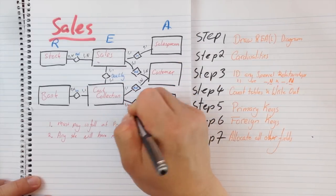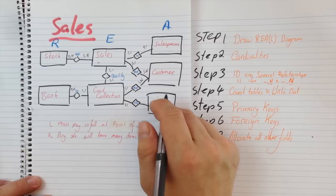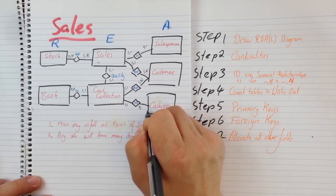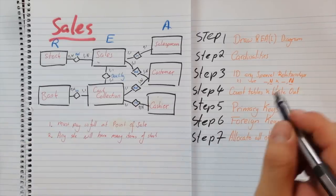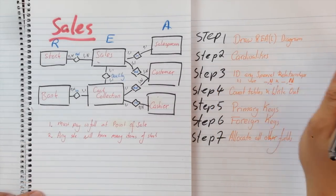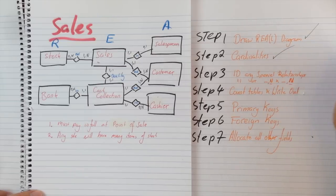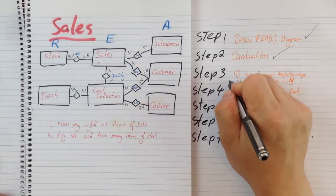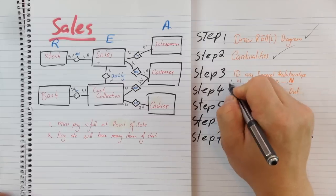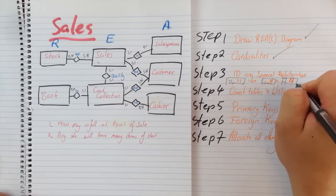We know that the cashier relationship will be one-to-one because every cash collection must be collected by a cashier, and every single cashier can collect zero — if it's their first day — or many, because they've worked here for a long time. What we have done now is we have drawn our REA diagram and we've done the cardinalities. Now we need to find any relationships that are essentially one-to-one or any maximum-many to maximum-many relationships.